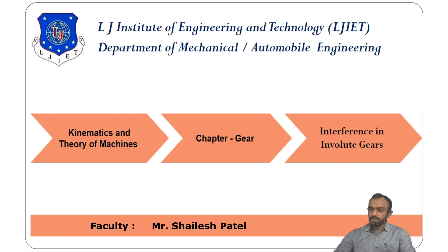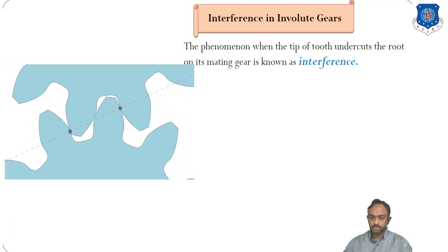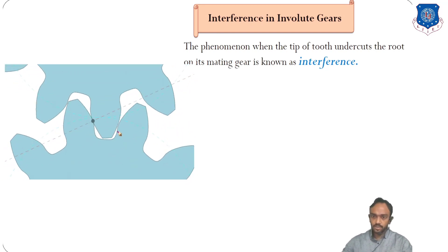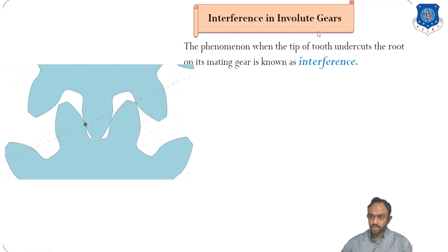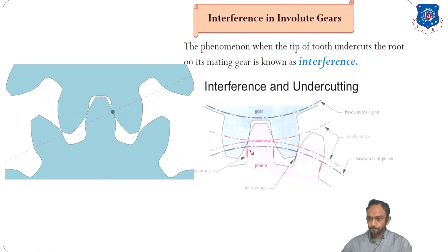Our next topic is interference in involute gears. The phenomena when the tip of a tooth undercuts the root of its mating gear is known as interference. You can see here that the profile is modified and a curvature is added so that the tip of the teeth does not cut the root of the mating gear. The tip of this tooth is undercutting the root of the gear — that is interference, also called undercutting.